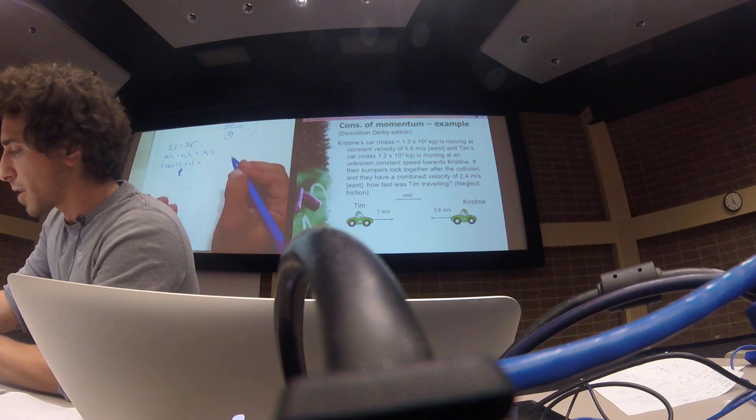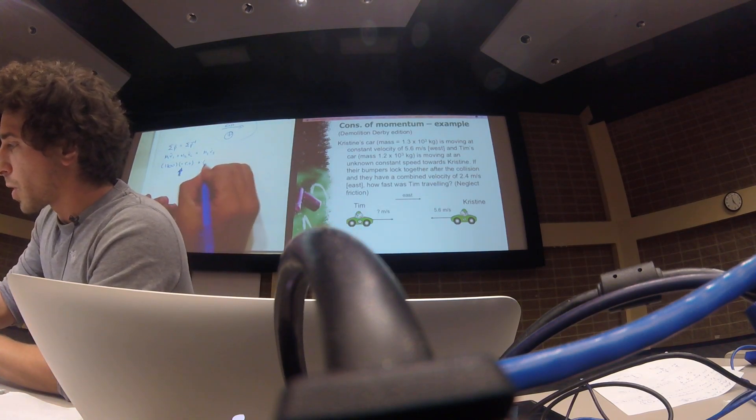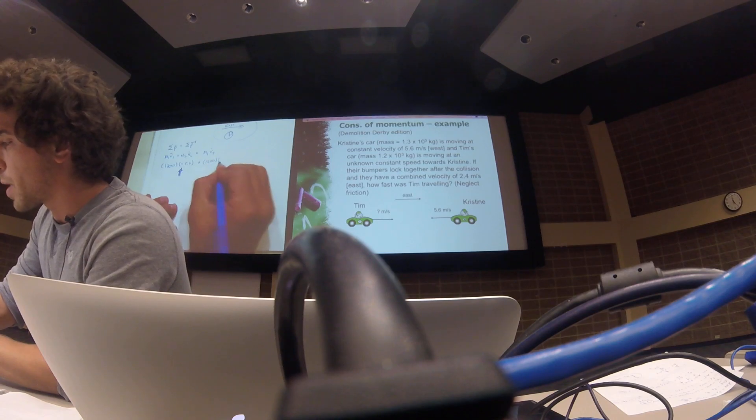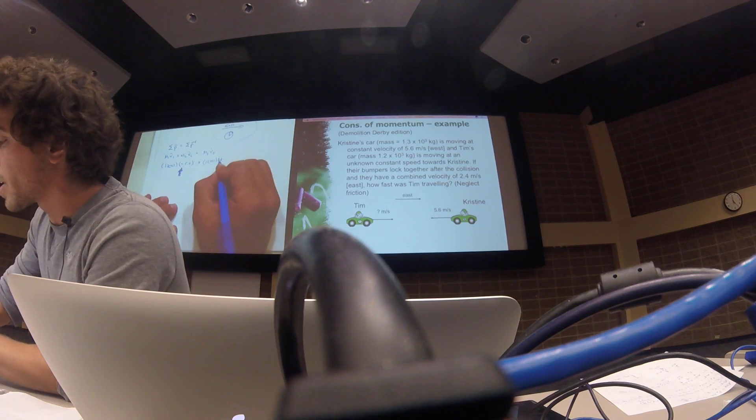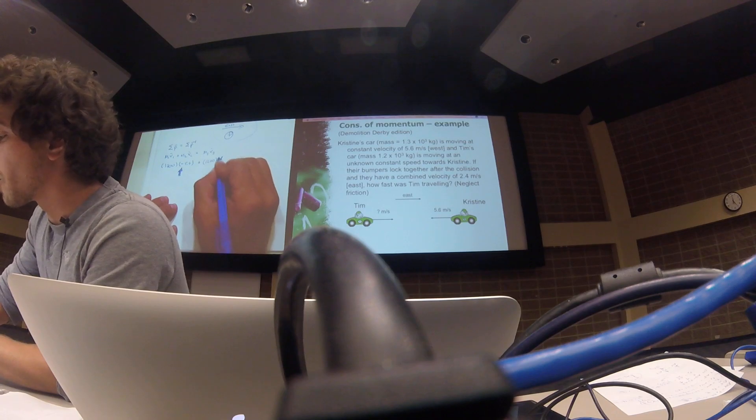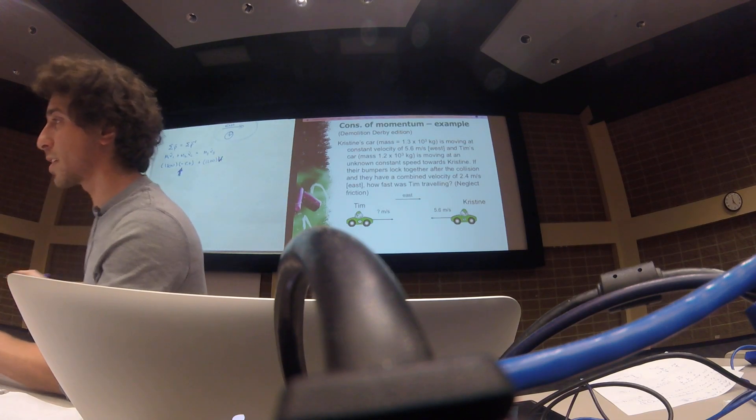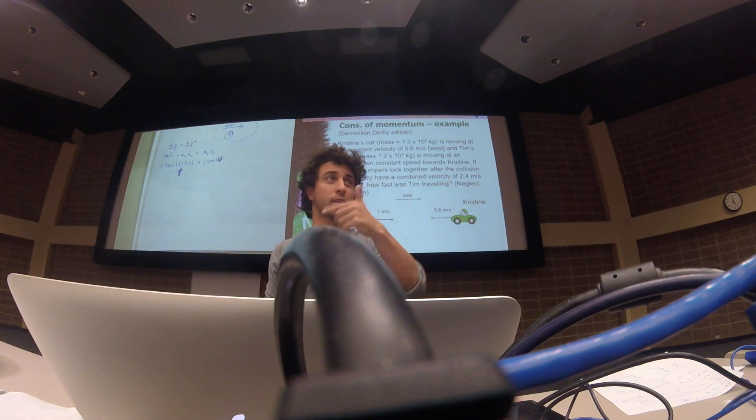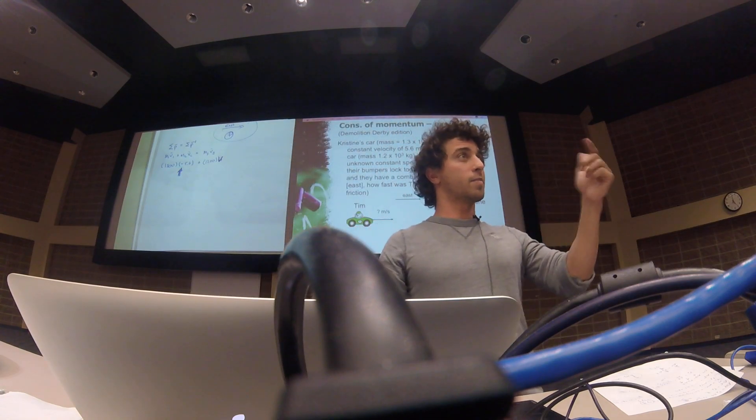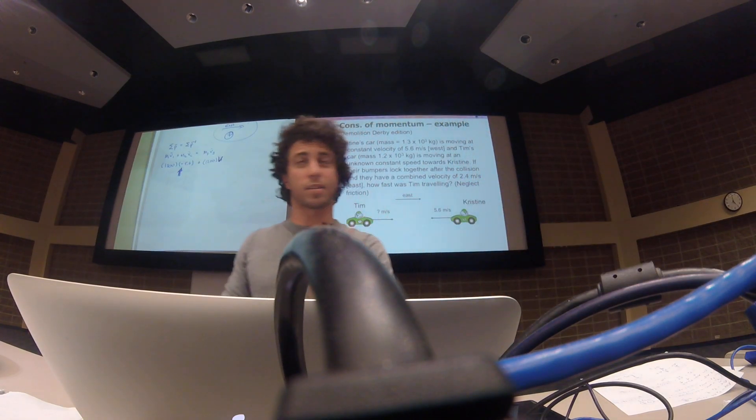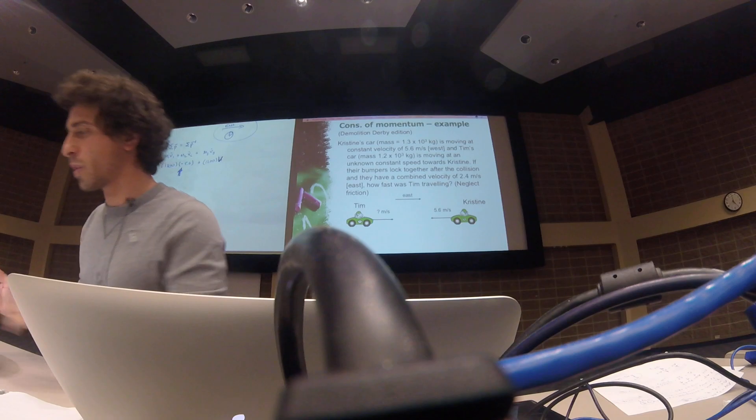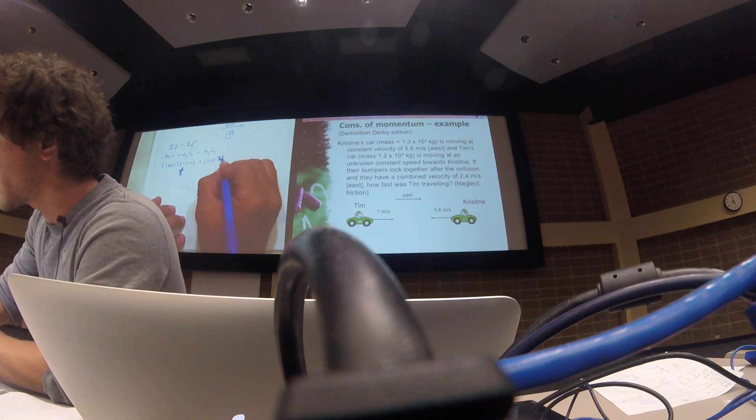So that means for Tim's car, which is 1,200 kilograms, it's going to be positive. Oh, we don't know what it is. We're going to assume, we're hoping that it's going to be positive. Our answer should be positive because by the way that the diagram shows us, he's moving in the positive direction, but we don't know what that is at this point. So we're going to solve for that V2.